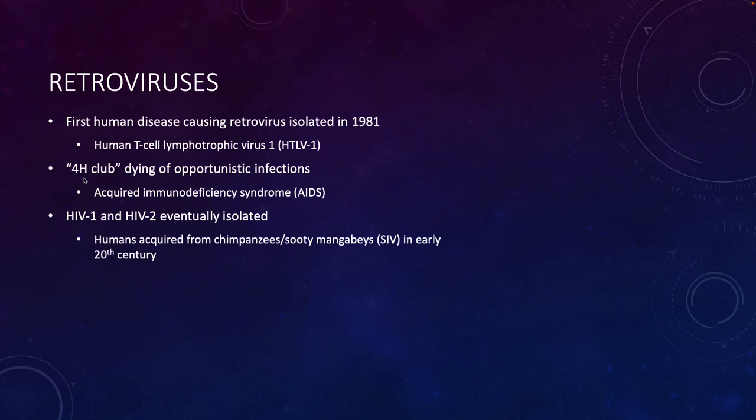For a long time, people thought that the jump from primates to people happened really close to the 1980s, because that's when we really saw the boom of patients. But a lot of genetic work and phylogenetic analysis demonstrated that humans most likely acquired the infection from chimpanzees or sooty mangabees, another type of primate, in the early 20th century.